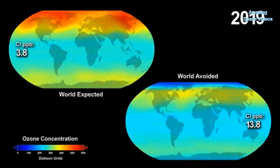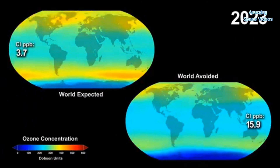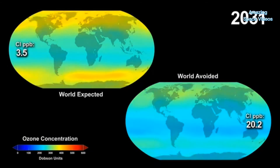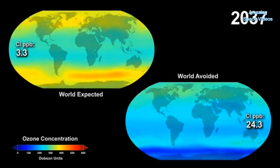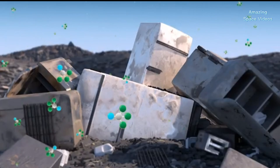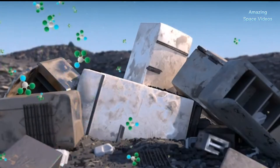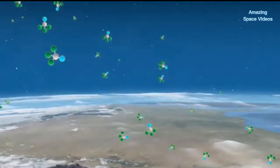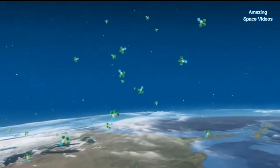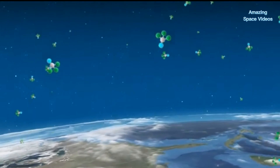But why do we still see an ozone hole today? First, CFCs have lifetimes of 50 to 100-plus years, and it will take some time for the concentration of CFCs in the atmosphere to drastically decline. Second, there are still CFCs being released into the atmosphere today — for example, as an old refrigerator or air conditioning unit deteriorates in a landfill, the CFCs within are slowly released.